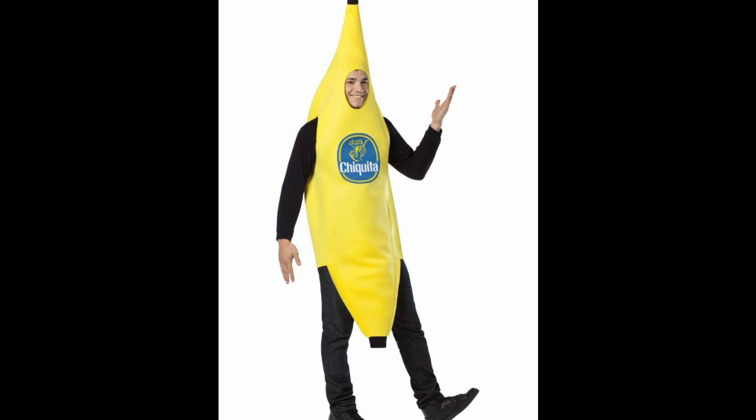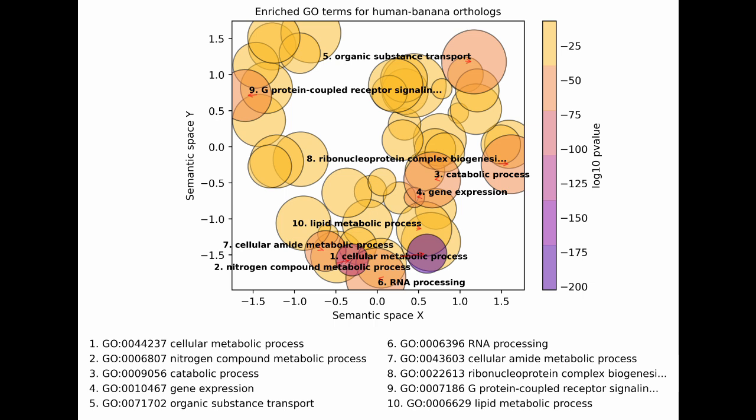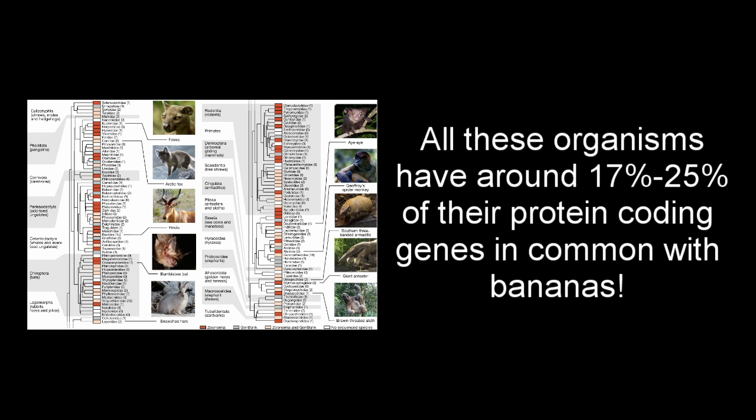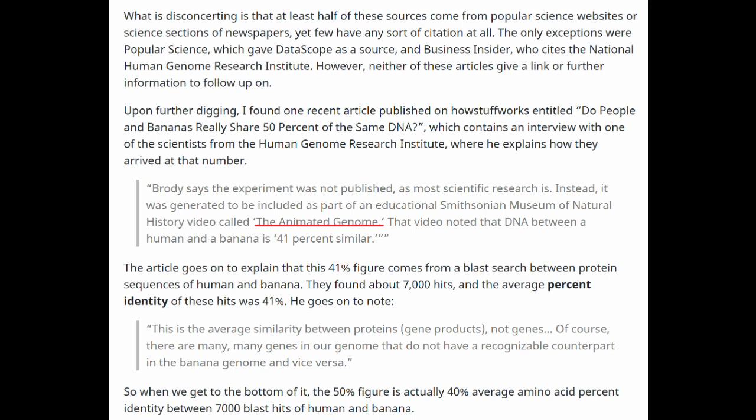So what do those shared genes actually do? Natasha investigated that as well and found that the human-banana orthologs are highly enriched for basic metabolic processes such as cellular metabolic processes, gene expression, and RNA processing. These biological functions are likely key genes which encode for cellular processes essential for all eukaryotic life — which means any mammal, any reptile, any amphibian, any member of the animal kingdom will share approximately the same amount of their DNA with bananas as humans do. So where did this number even come from? This is precisely why citing your sources is so important. Natasha found that the number came from a single animated video. So when we get to the bottom of it, the 50% number is actually less than 1% when looking at whole genome comparisons.